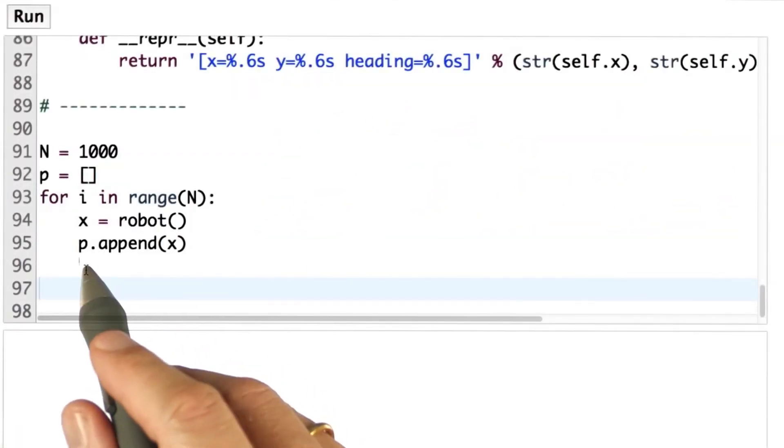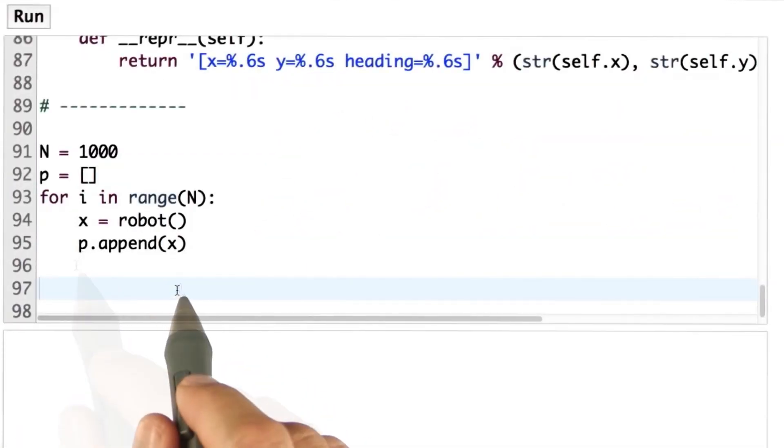So please go back to the code and make a new set P that is the result of this specific motion, turning by 0.1 and moving forward by 5.0, to all of those particles in P.